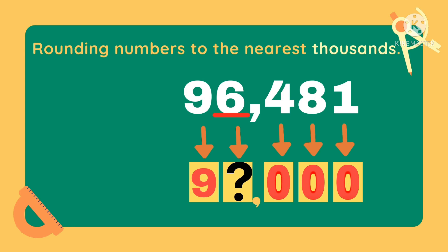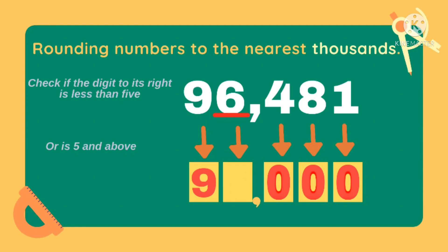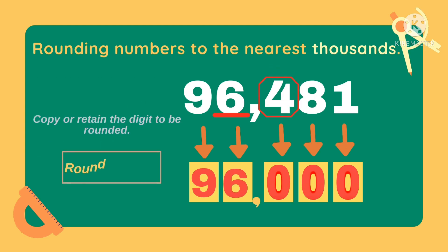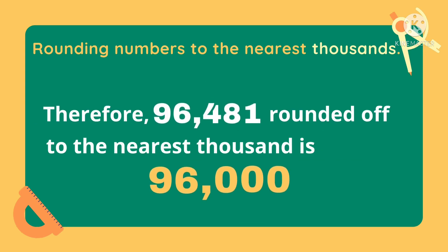Now, how about the digit that we need to round off? We can keep the digit the same or we can increase it by 1. Again, we need to check if the next digit to the right is less than 5, such as 1, 2, 3, and 4, or if it is exactly 5 and above, such as 5, 6, 7, 8, and 9. For this example, the digit we need to check is 4, and since it is less than 5, we just need to copy or retain the digit to be rounded. Therefore, 96,481 rounded off to the nearest thousand is 96,000.